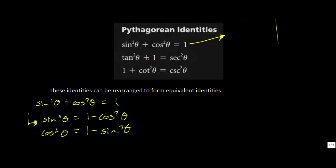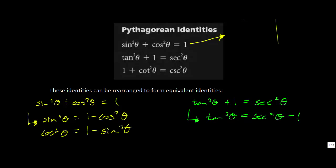For the tangent identity: tangent squared theta plus 1 equals secant squared theta. You could rearrange in terms of tangent squared theta, giving secant squared theta minus 1. Or you could isolate the 1, giving 1 equals secant squared theta minus tangent squared theta — or equivalently, tangent squared theta minus secant squared theta equals negative 1.